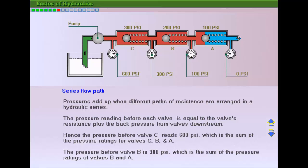Hence the pressure required to open valve C is 600 psi, which is the sum of the resistances for valves C, B, and A. The pressure reading in the gauge placed after valve A is theoretically zero, as there is no resistance downstream.